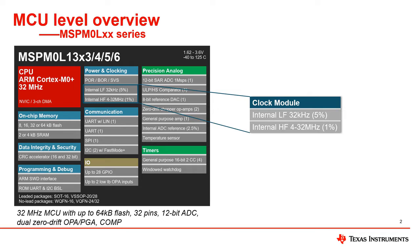The MSPM0L has a clock up to 32 megahertz in speed, up to 64 kilobytes in flash, and rich analog peripherals. From the block diagram, we can see that the cost-effective M0L series has no support for external clock sources — it only has internal clock sources available.